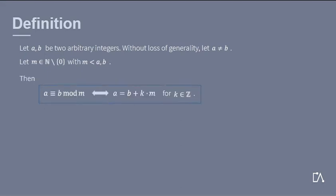Then, a is equal to b modulo m, if and only if, a can be written as the sum of b and a multiple of m. One says that a is equal to b modulo m. So, basically a and b are the same number up to a multiple of m.